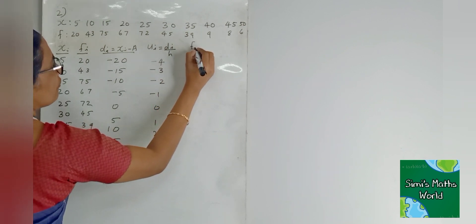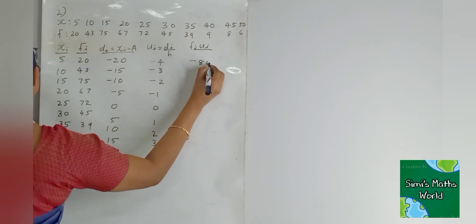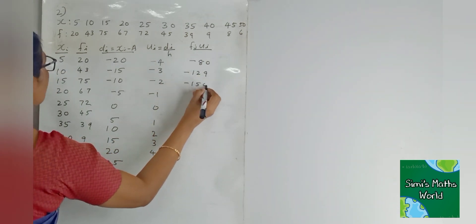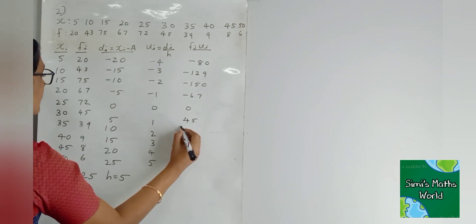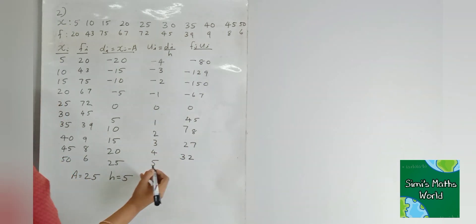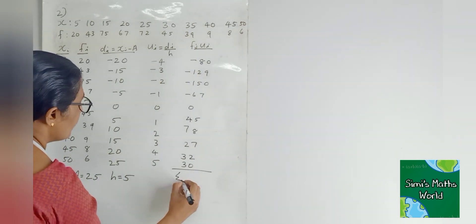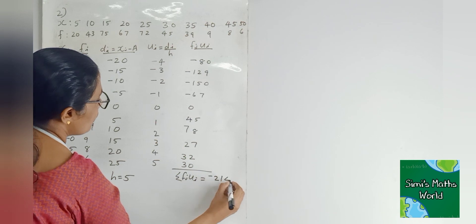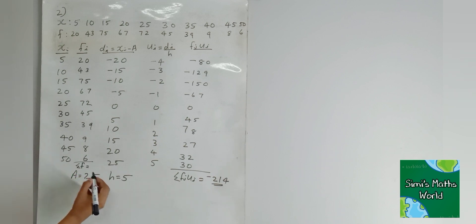Calculate fi into ui: 20 into minus 4 equals minus 80; then minus 129; minus 150; minus 67; 0; 45; 78; 27; 32; and 30. Sigma fi·ui equals minus 214. Sigma fi equals 384.